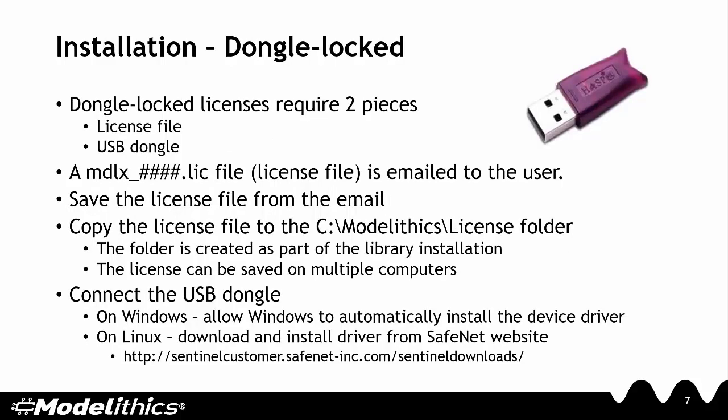Installing a dongle-locked license requires a license file and a USB dongle. The license file is emailed to the user, and you simply place it in the C Modellytics license folder. The license can be saved on multiple computers. After connecting the USB dongle, allow the device driver to be automatically installed if you're using Windows. If you're using Linux, download and install the driver from the SafeNet website.